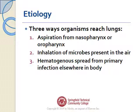There are three different ways that organisms can reach the lungs. One is aspiration from the nasopharynx or oropharynx. Number two is inhalation of microbes present in the air. And number three is hematogenous spread from a primary infection elsewhere in the body. This is less common, but it can happen with patients who have a terrible UTI left untreated, or patients with a central line who've had a serious infection spread to the lung parenchyma.